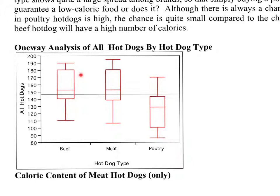Up here are 75% of the observations for beef hot dogs. Similarly, for meat hot dogs, up here are 75% of the observations. And for poultry hot dogs, the lower 75% of the observations are down here. So what can we say?